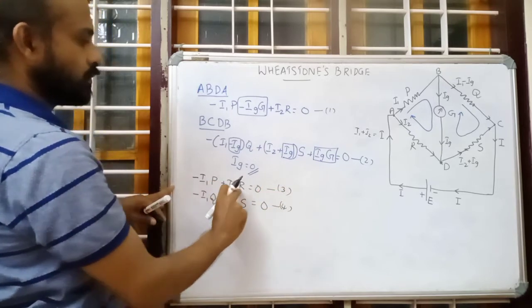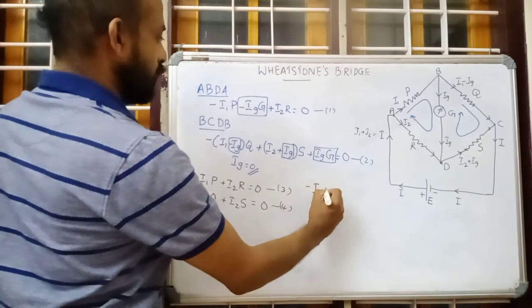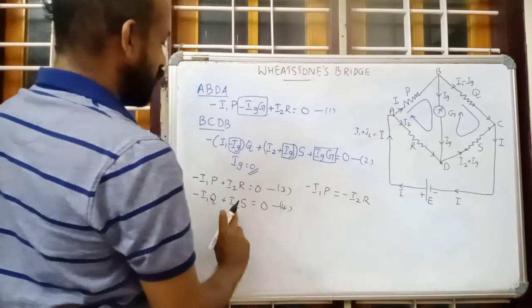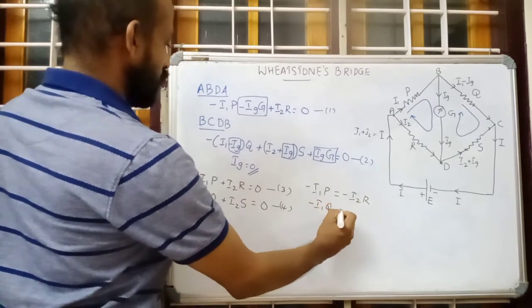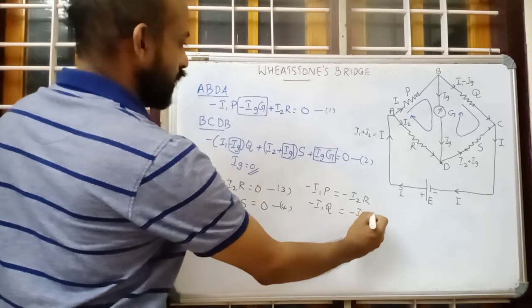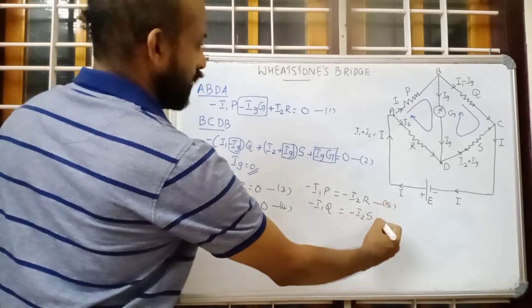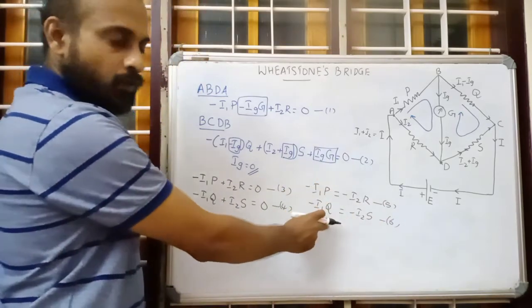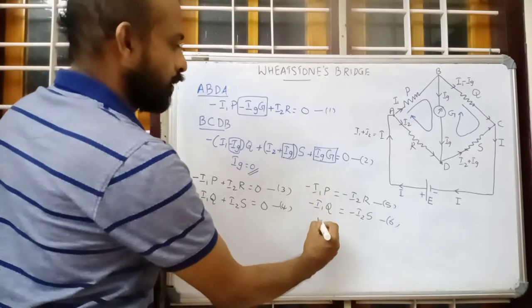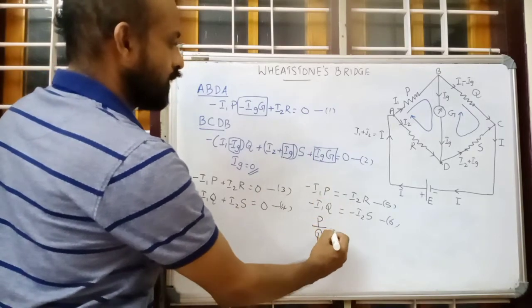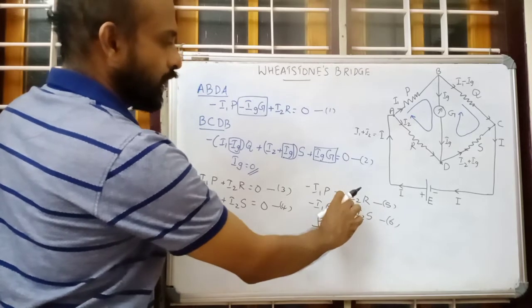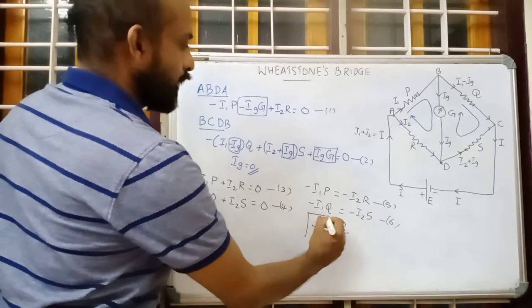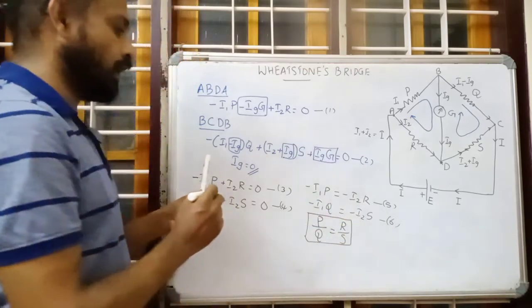From the simplified equations, we get minus I1·P equals minus I2·R, and minus I1·Q equals minus I2·S. Dividing these two equations: (I1·P)/(I1·Q) = (I2·R)/(I2·S). The I1 and I2 cancel, and the minus signs cancel. We get P/Q = R/S. So if we take resistors in such a ratio that P/Q = R/S, the bridge is balanced.